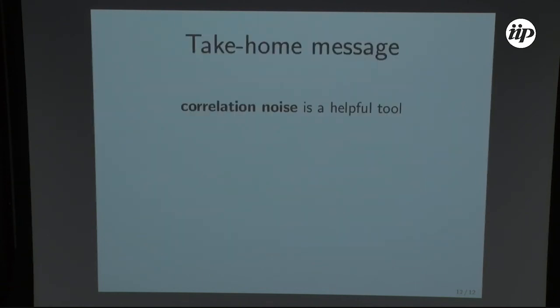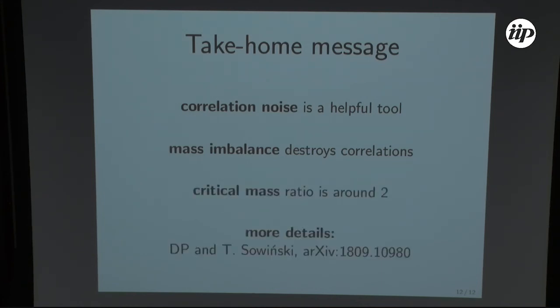So yes, so my take home message is that the correlation noise is a helpful tool. Mass imbalance destroys the correlations in attractive harmonic systems. And the critical mass is around two. If you are more interested, more details are here. Thank you for your attention.